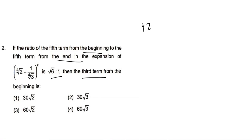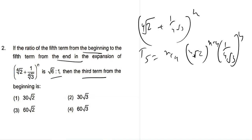The expression is this: the fifth term from the beginning is T5 = nC4 × 4√2^(n-4) × 1. The fifth term from the end is T5' = nC4 × 1 × (n-4). These two terms will help us solve the problem.